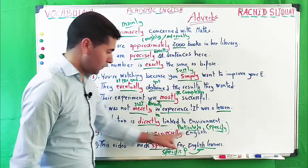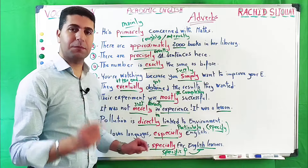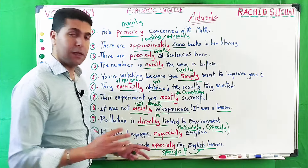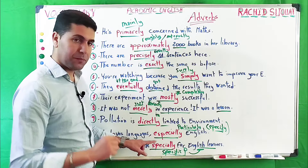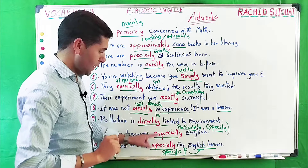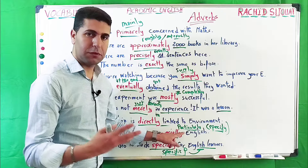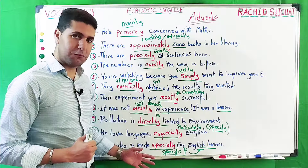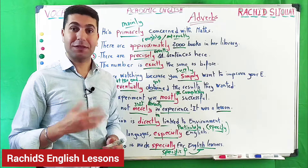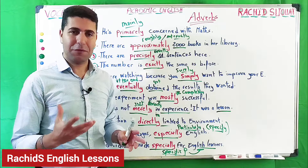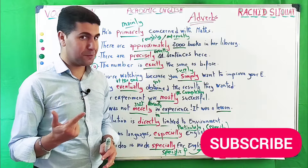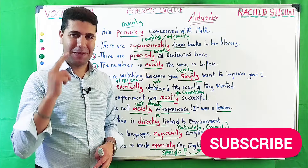It is very important to know the difference between these two uses of 'especially': one means 'particularly or specifically,' and the other means 'for a specific purpose.' All these adverbs — primarily, approximately, precisely, simply, eventually, mostly, merely, directly, especially — are very necessary to know and use in academic contexts and for academic purposes. If you have any questions or suggestions, don't hesitate to let me know. See you in another episode. Have a good time and goodbye.